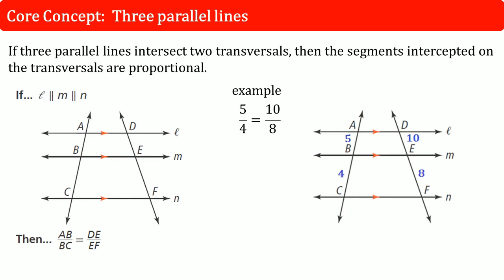So the core concept here is given three parallel lines and they intersect by transversal. That transversal is the line that goes up and down. Then the segments intersected on the transversals are proportional. So AB divided by BC is equal to DE over EF. These are the line segments on the transversal. If you'd like to see it with numbers, it looks like on the right-hand side, 5 divided by 4 is equal to 10 divided by 8. That's the core concept on the three parallel lines.